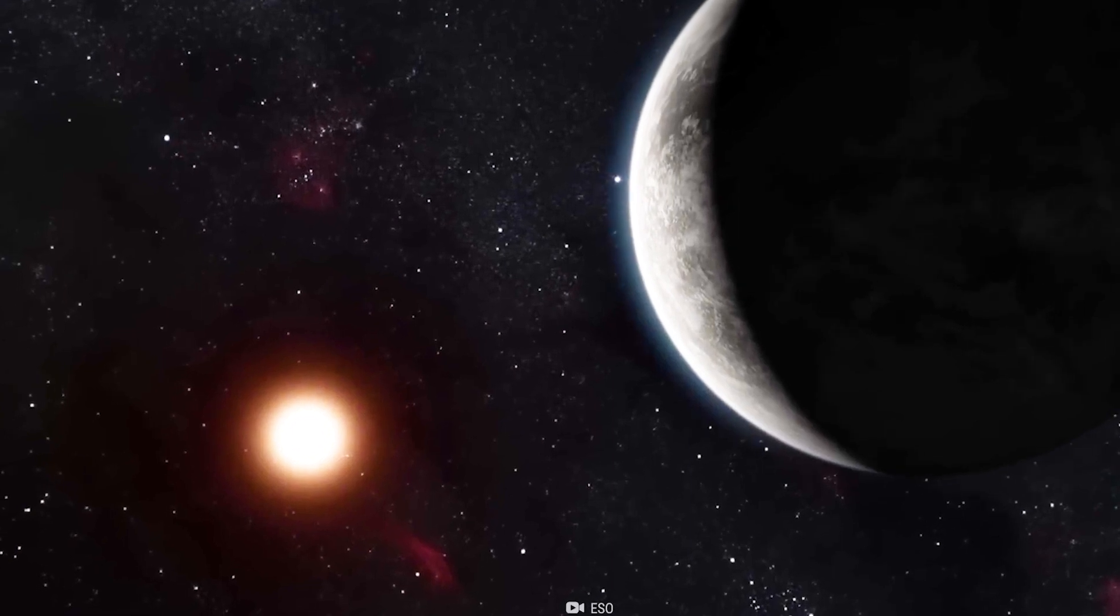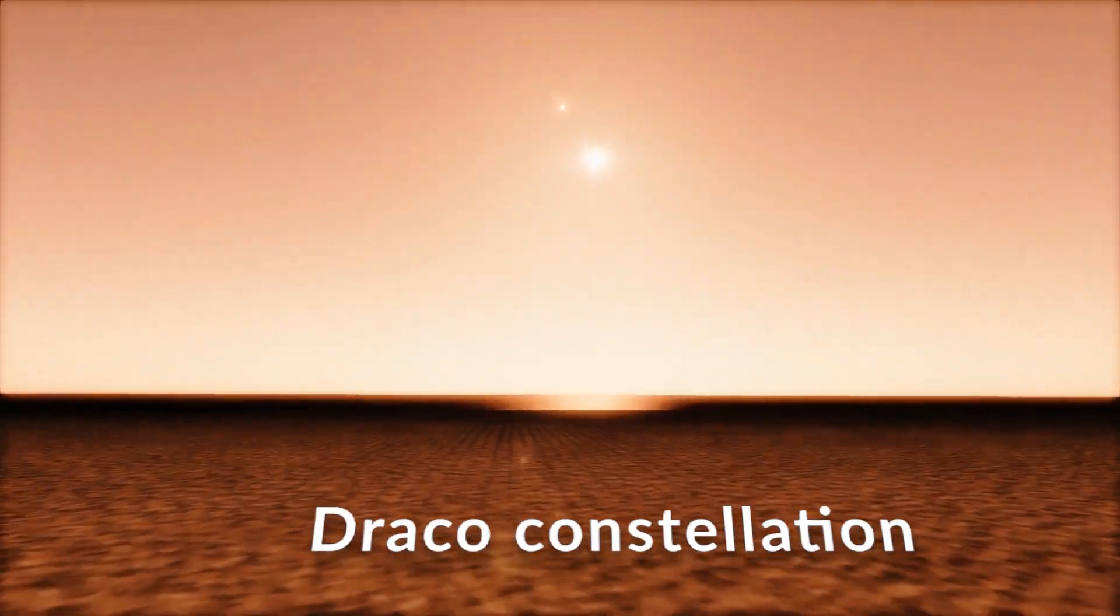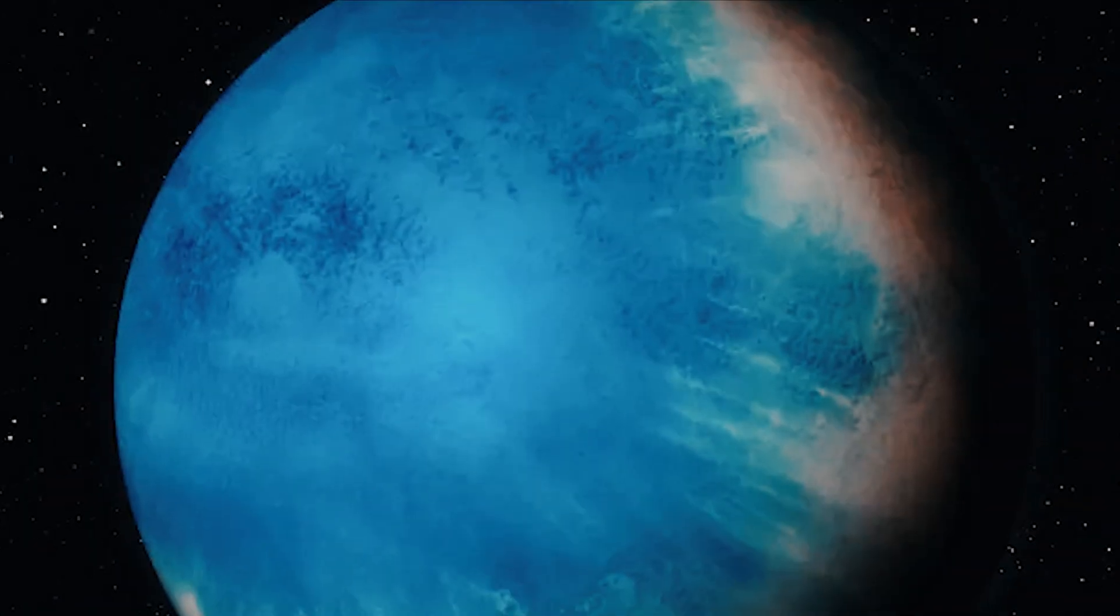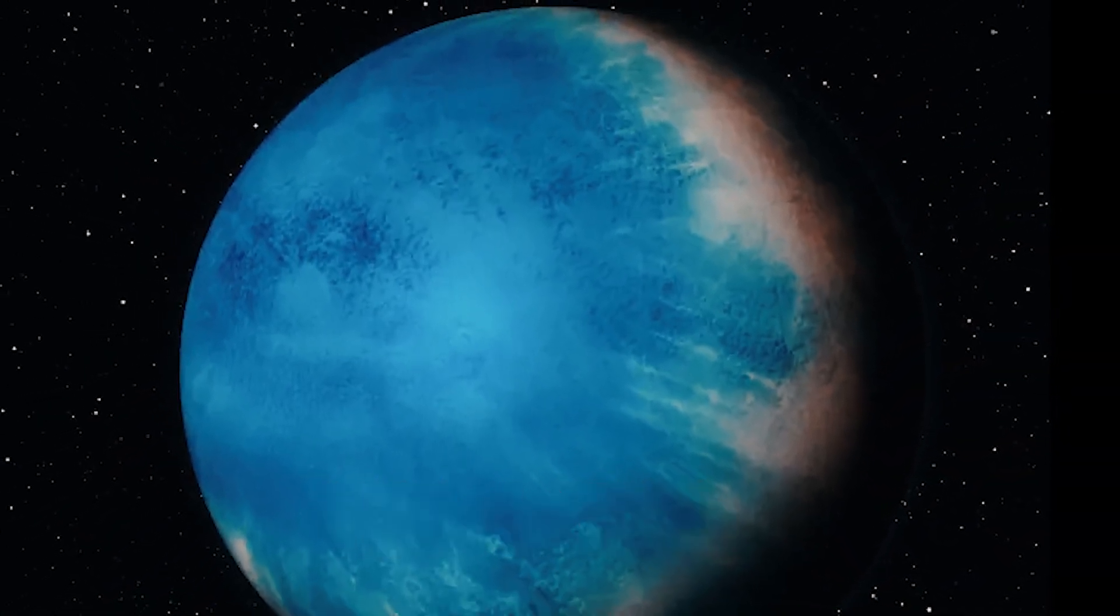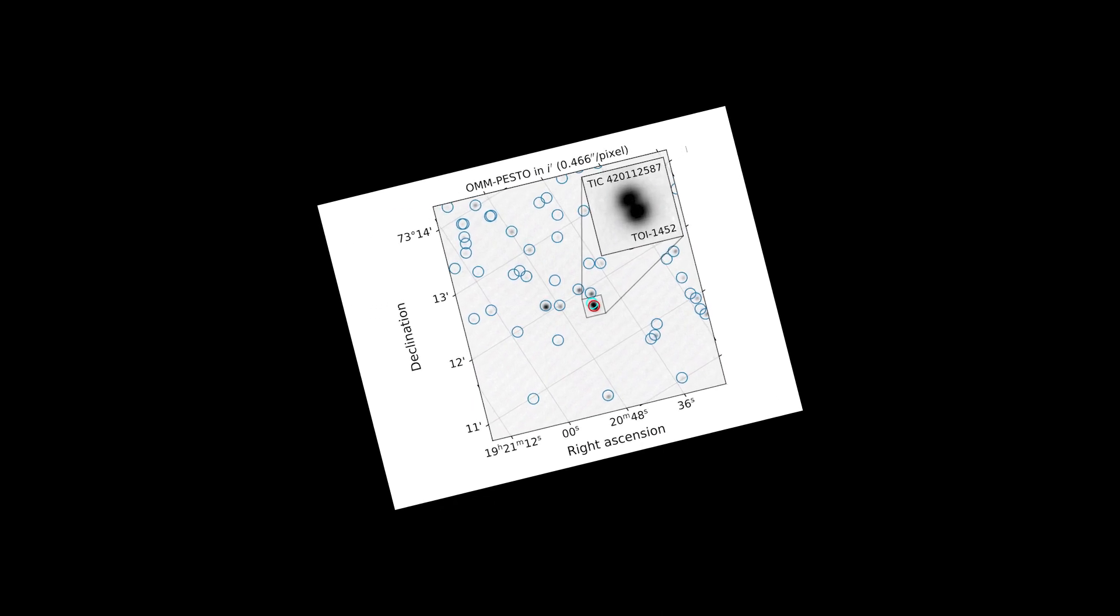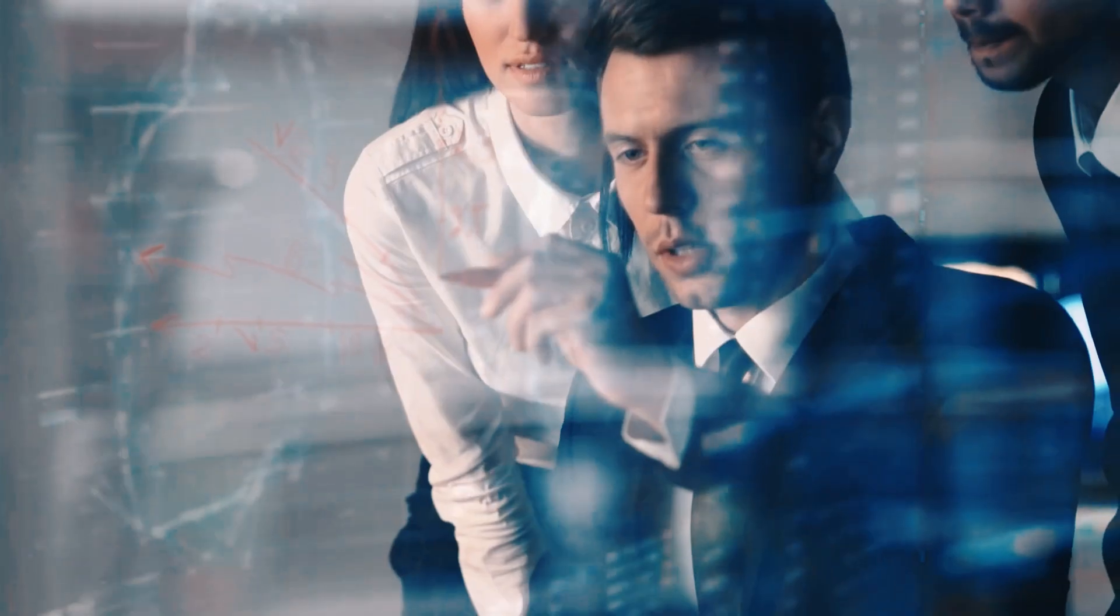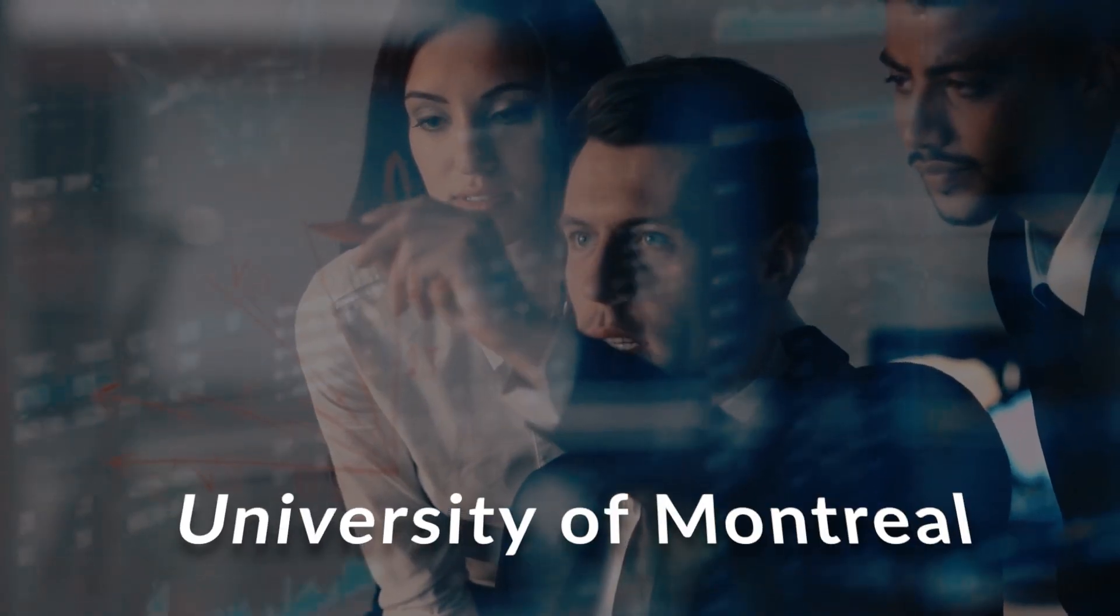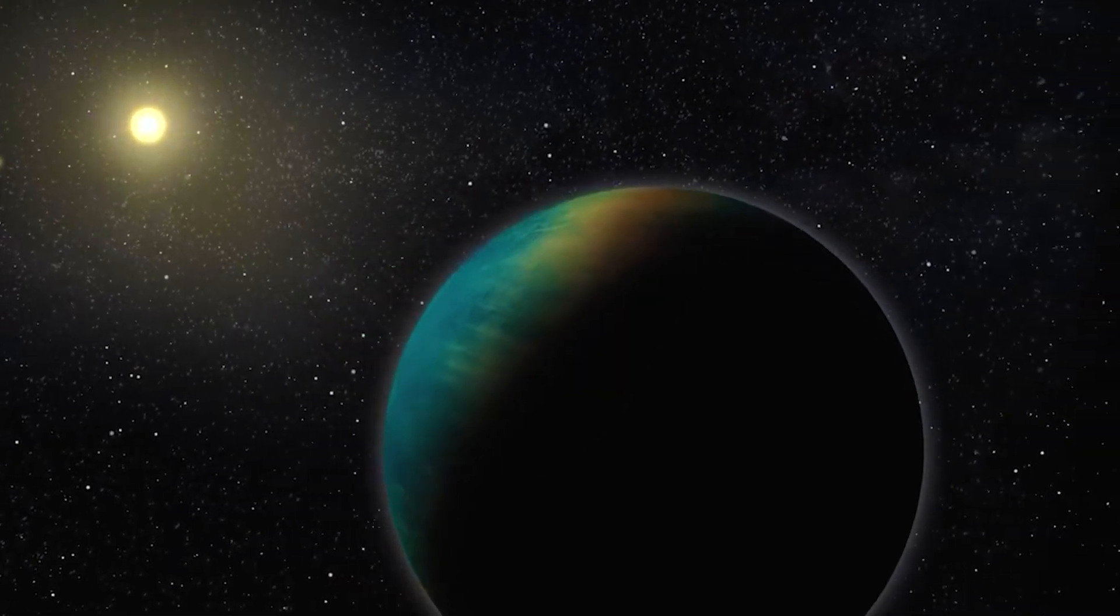Astronomers recently announced that a potentially ocean-covered exoplanet has been discovered, orbiting binary stars in the Draco constellation about 100 light-years from Earth. The planet was given the catchy name TOI-1452b and its discovery was announced in an article published in the Astronomical Journal. An international team of scientists led by the University of Montreal recently announced the discovery of this ocean planet that could host life.